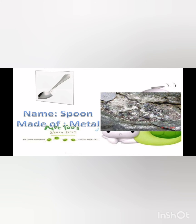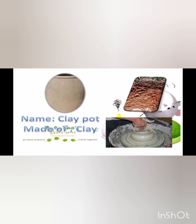Metal also comes from nature — metals are found in many rocks. We make spoons and cars from metal. Another natural material is clay, which you have learned about before. Clay also comes from the ground — it is a kind of soil — and we make clay pots and bricks from clay.